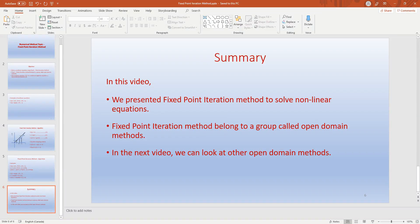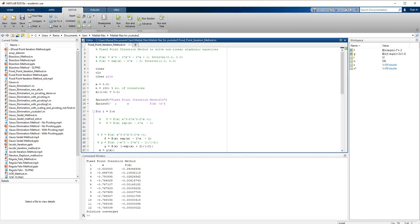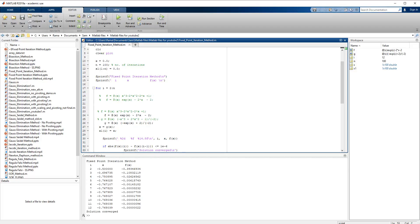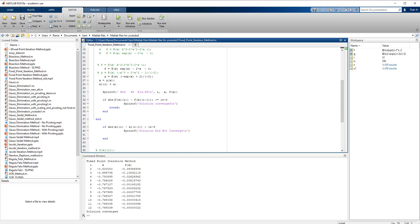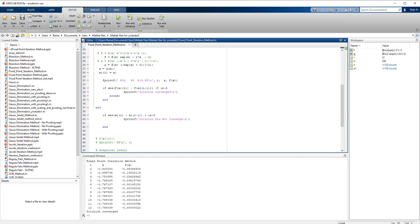Now we go to MATLAB and try to solve the nonlinear equation. So we assume an initial value for x as 0. The number of iterations we set it to say 100, and the algorithm is presented here as we discussed. The stopping criteria or the convergence criteria is given over here.